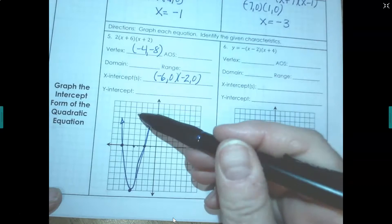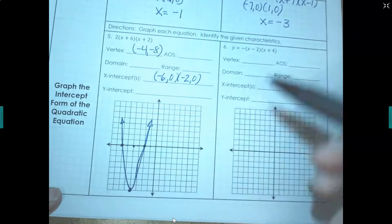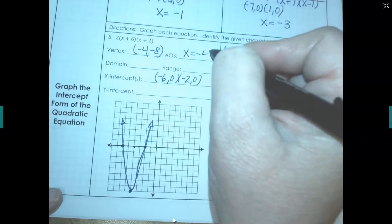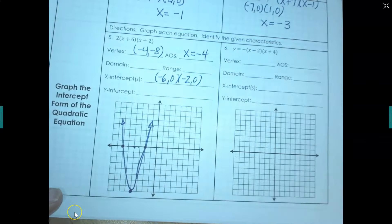Now we can go ahead and answer the rest of our questions now that we've done our sketch. Your axis of symmetry is halfway through. It goes right through the vertex and the name of that line will be x equals negative 4 because it's going to be the same as the x value of your vertex.